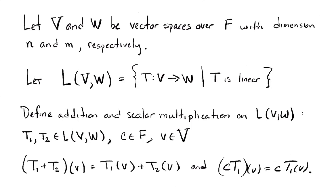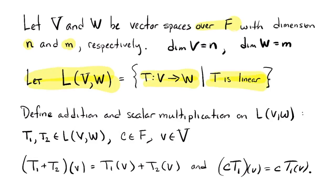Here's the main definition. If you give me two vector spaces V and W over the same field F, with dimensions N and M respectively — dimension of V is N, dimension of W is M — then L(V,W) is just the set of all functions from V to W that are linear. The L stands for linear transformations, so it's linear transformations from V to W.